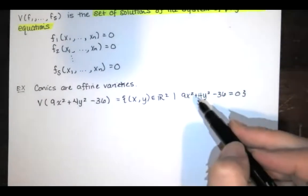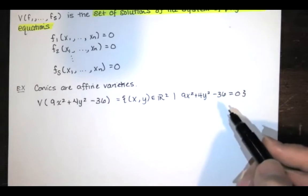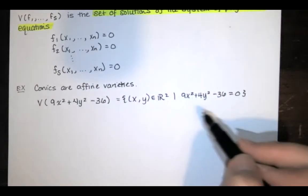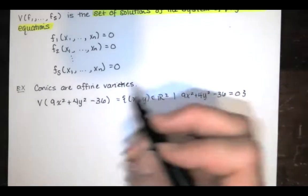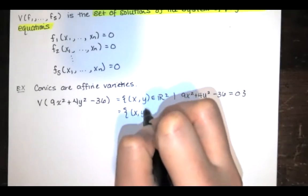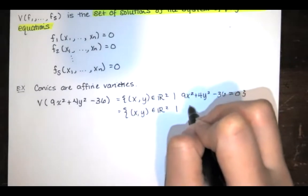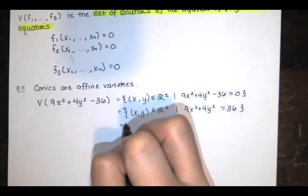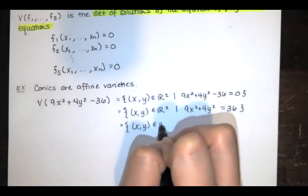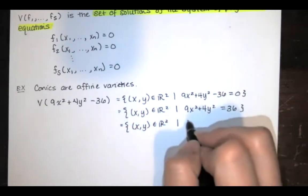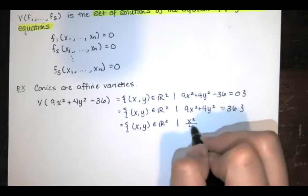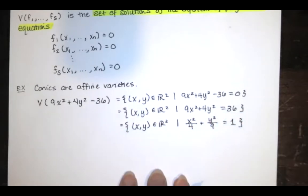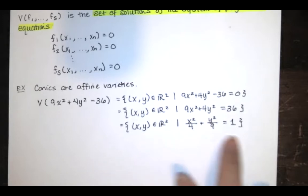You might not immediately recognize it, but since both x and y are squared and both terms are positive with different coefficients, that's an ellipse. If we move the 36 to the other side and divide both sides by 36 — noting 9 goes into 36 four times and 4 goes into 36 nine times — this affine variety is the graph of an ellipse.